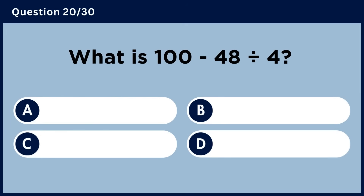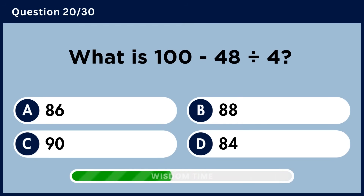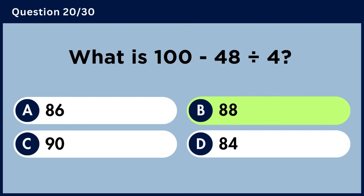What is 100 minus 48 divided by 4? Answer B: 88.